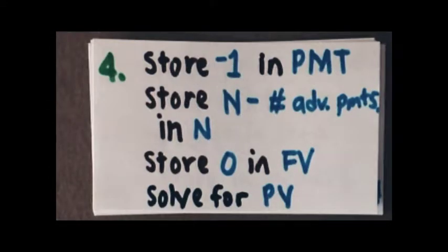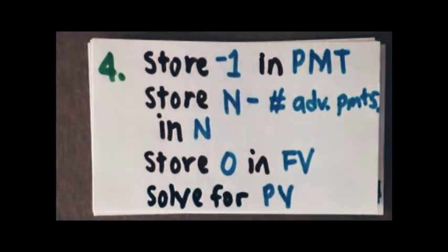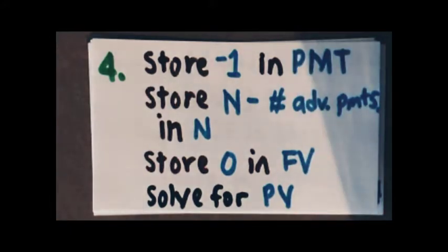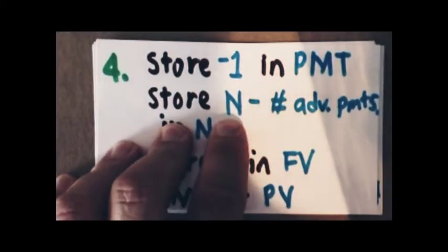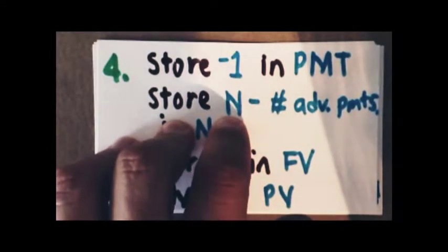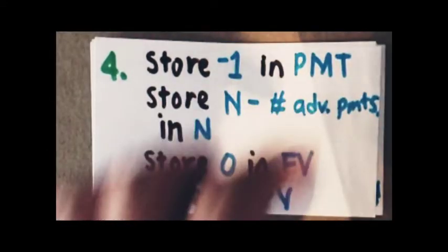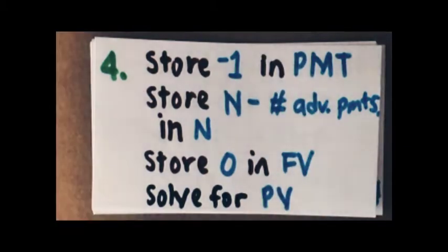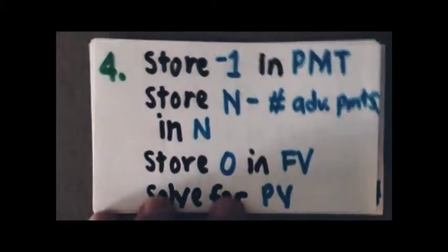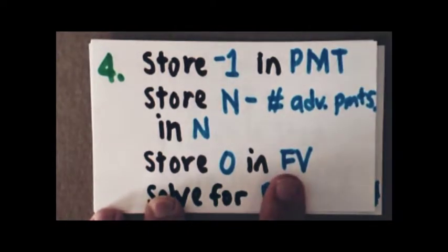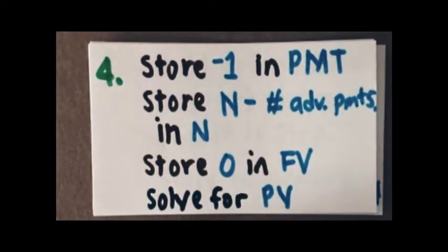The next step is to use another time value of money calculation. We're going to carry over the same values from the previous calculation. We're going to store negative 1 in payment. You're going to store the total number of payments during the lease minus A — the number of advanced payments — and store that in N. Then store 0 in FV, future value, and once again solve for present value.